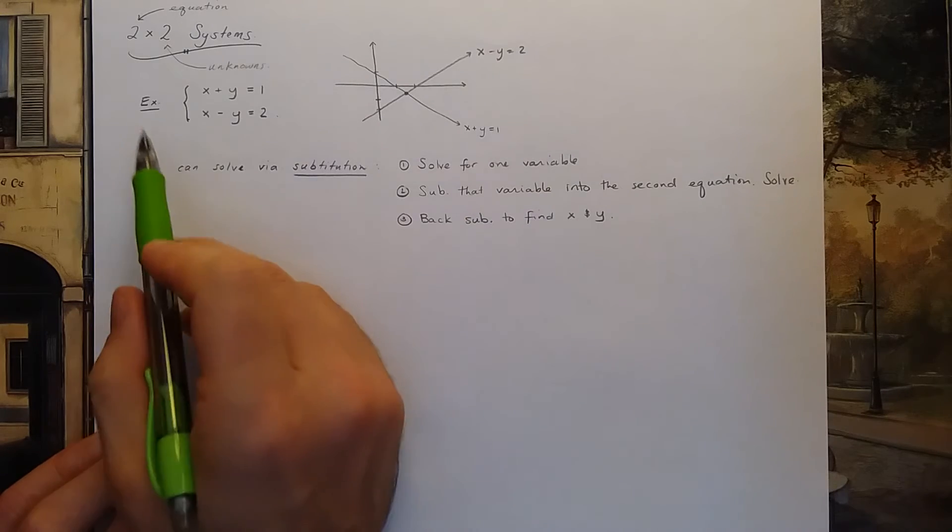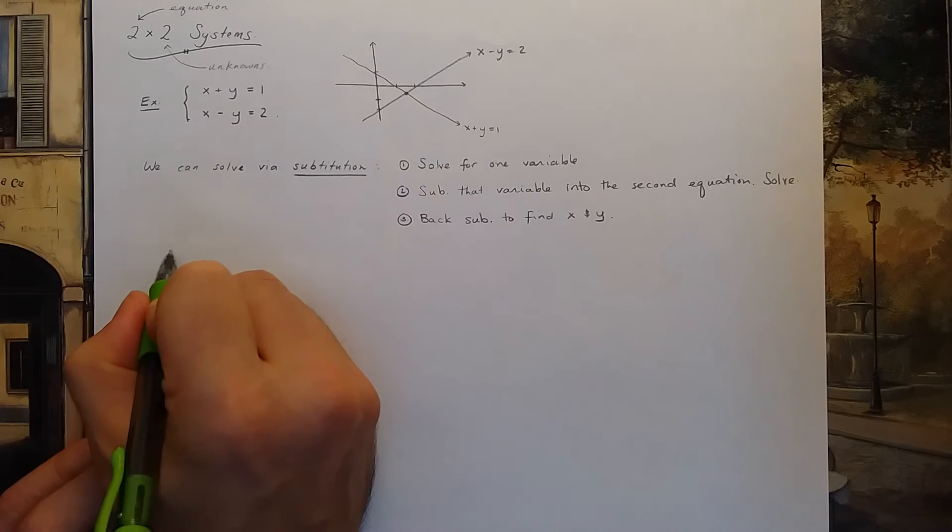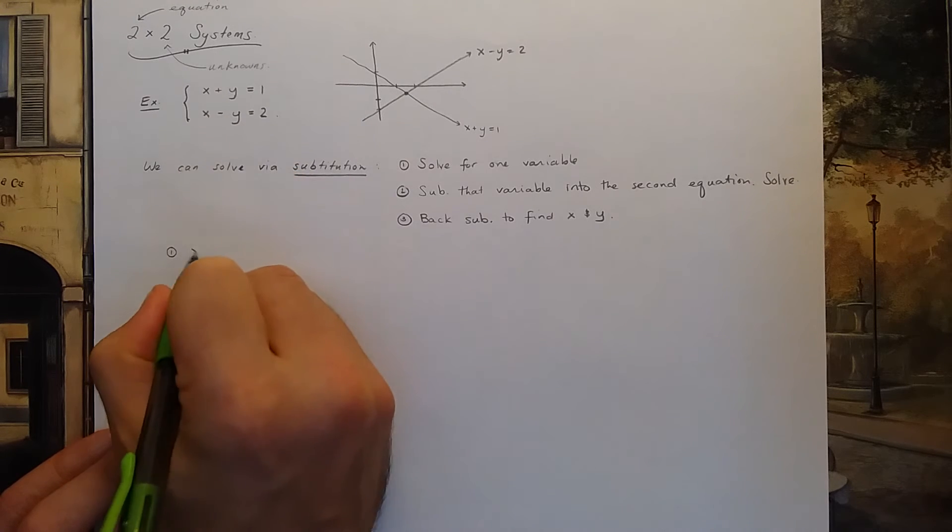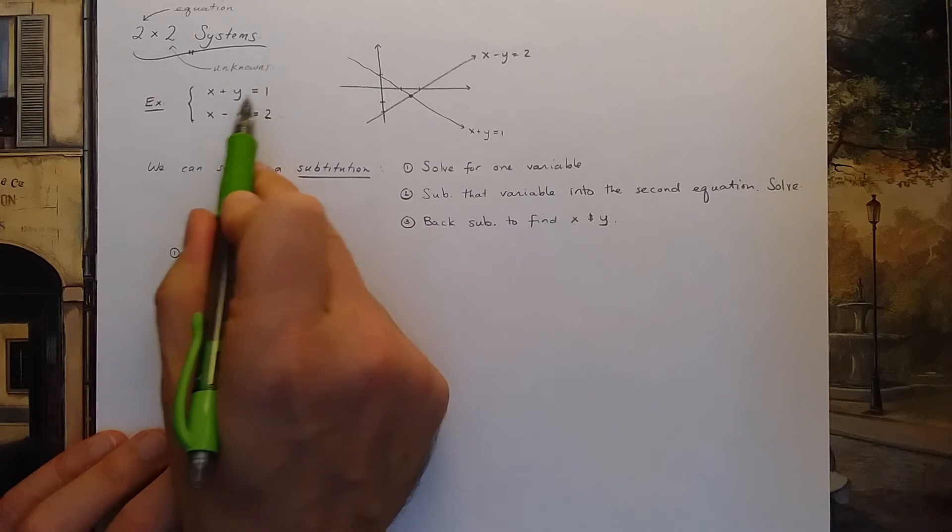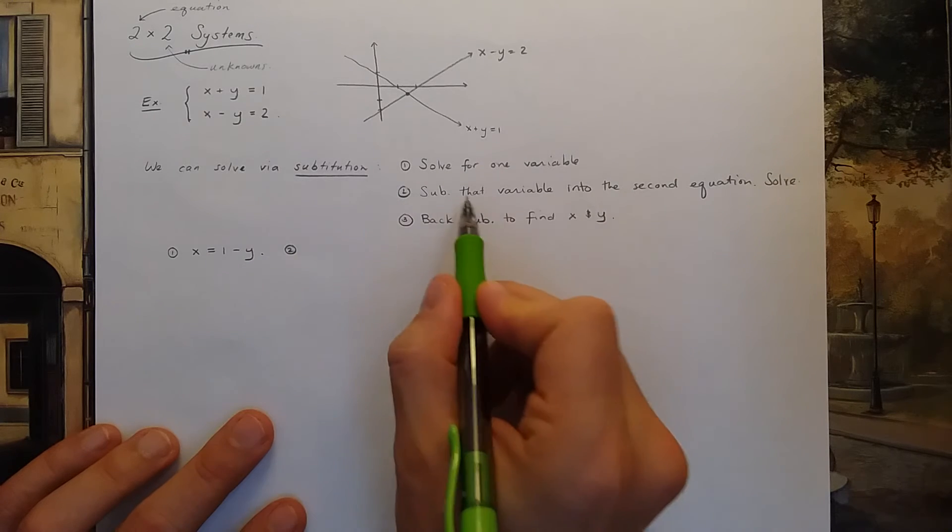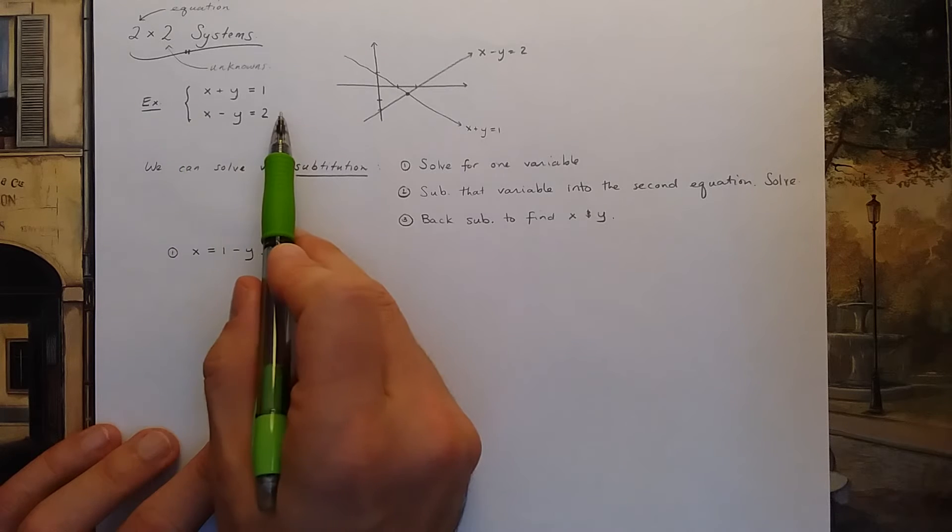And the last step in this process is to back substitute to find both variables x and y. So if I follow this process on this 2x2 system, then step 1 says I can write x as equal to 1 minus y. So I just took this top equation and subtracted y on both sides.